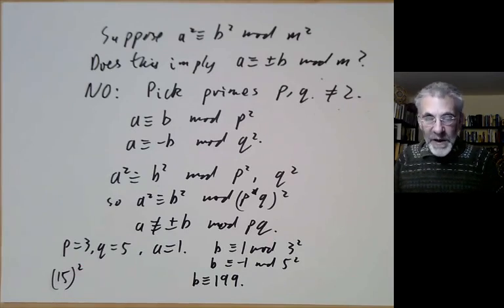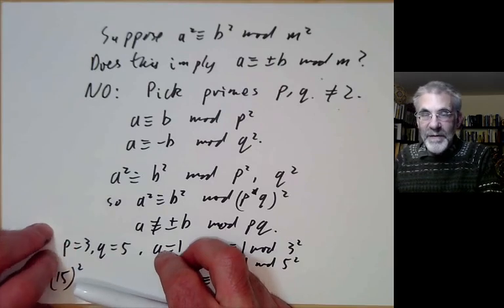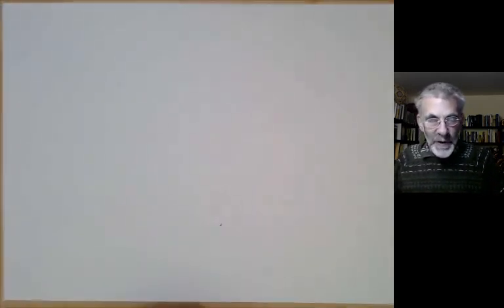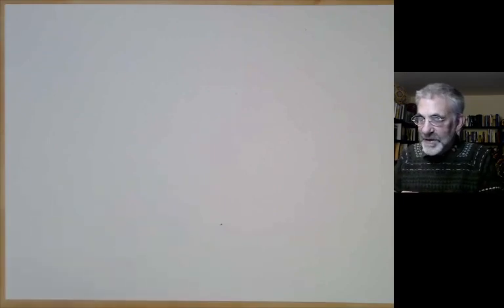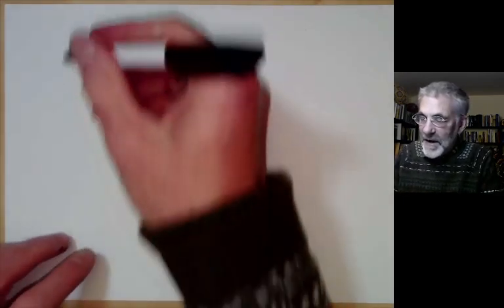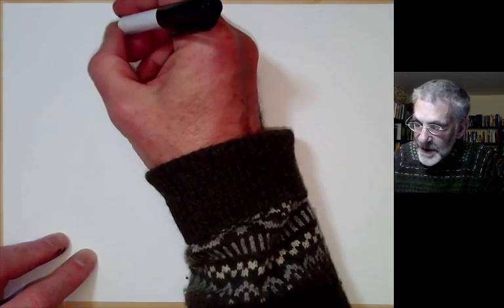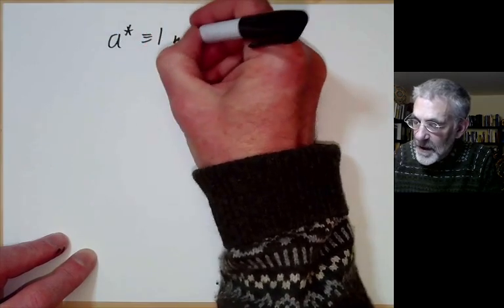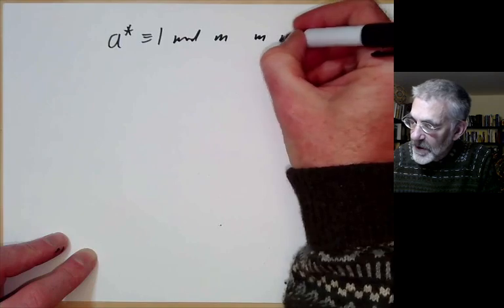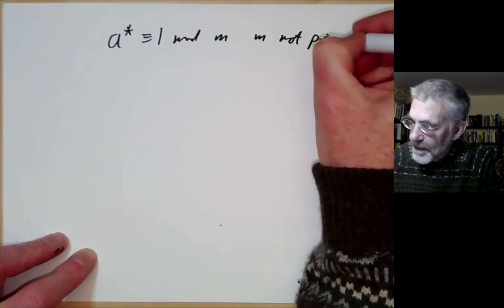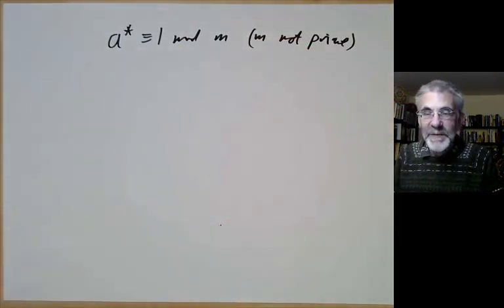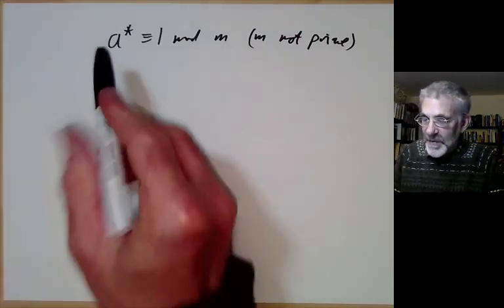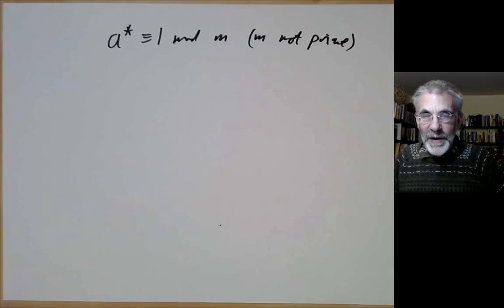So we've been discussing Fermat's theorem modulo a prime. The question is what happens for composite numbers: can we say a to the power of something is congruent to 1 modulo m for m not prime? This will be the subject of the next lecture, which will discuss a solution given by Euler.